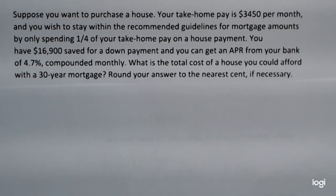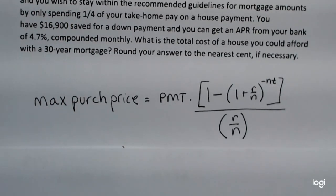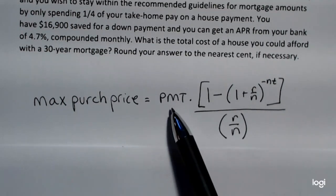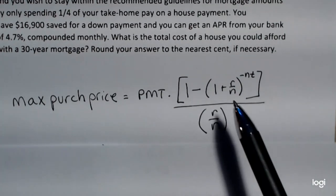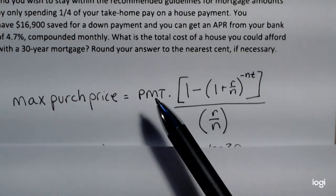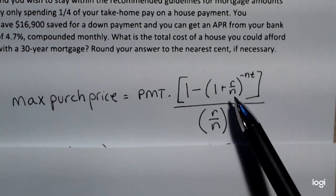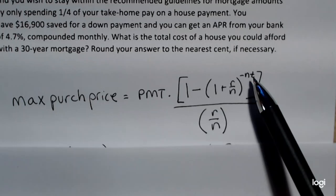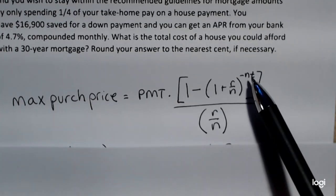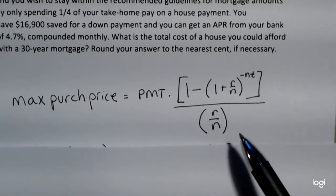The formula for the maximum purchase price has a lot going on. PMT is your monthly payment. This formula is without adding in the down payment, so we'll find this first and add in that down payment at the end. PMT is the monthly payment, R is the interest rate as a decimal, N is the number of times the bank is compounding per year, and T is time in years. One thing to notice is that there is a negative in this exponent, and if you're using a TI-30 or an older TI-84, you will definitely want to put parentheses around this exponent.